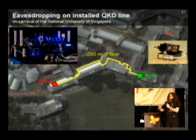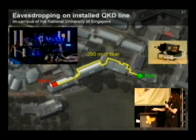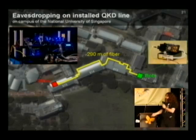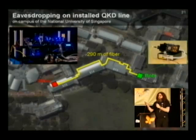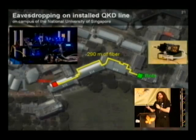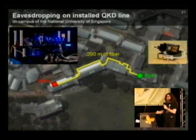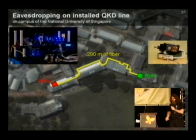It worked perfectly. We noticed all the statistics that Alice and Bob collect and display during the quantum key distribution, such as coincidence rate, detector clicking rate, quantum bit error rate, and key generation rate. We noted those statistics.